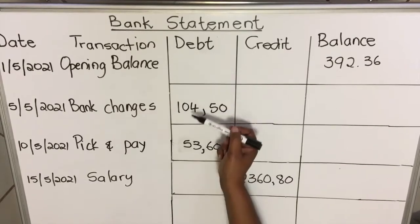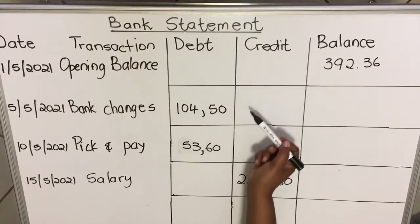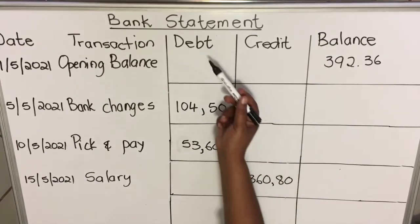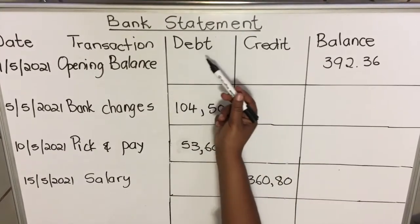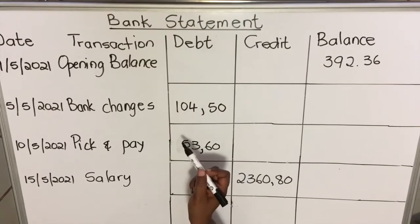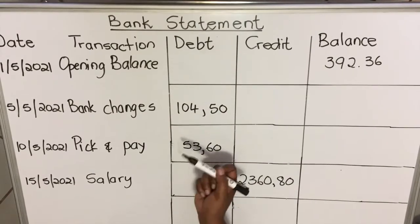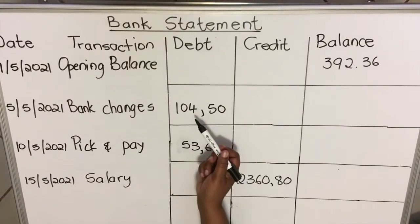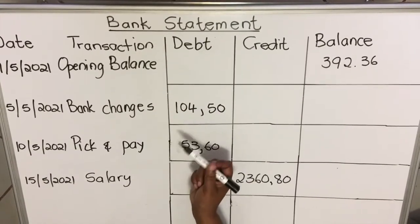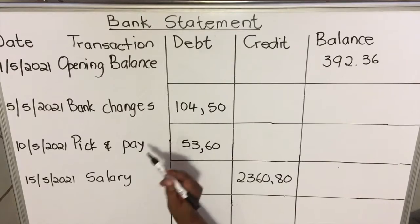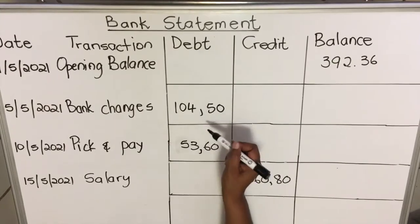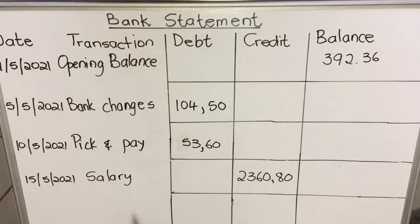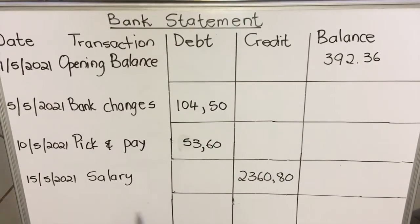Then you'll have a debit, a credit, and the balance. With the debit, when money goes out of the account it's debited, and when money goes into the account it will be credited.